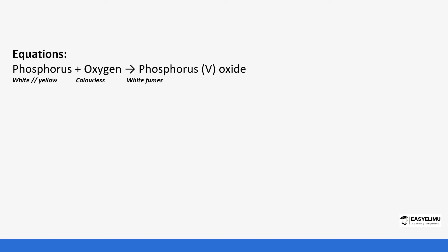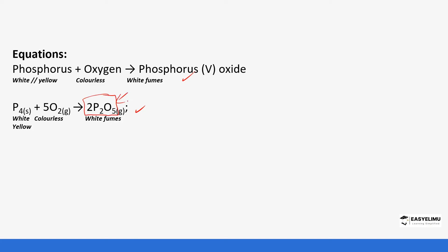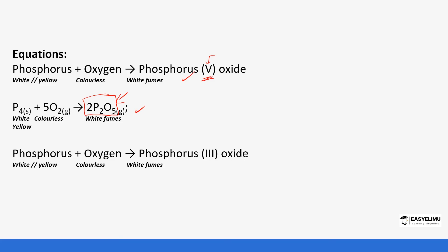Looking at the equations for the reaction: phosphorus reacts with oxygen to form two oxides. The first is phosphorus(V) oxide — P₂O₅ — as shown in the chemical equation. It is important to note this formula; we will discuss what the 5 represents in Form Two work. Phosphorus also reacts with oxygen to form a second oxide called phosphorus(III) oxide, also white fumes, with the formula P₂O₃.